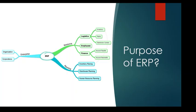SAP is an ERP system. ERP stands for Enterprise Resource Planning. 'Enterprise' represents organizations, corporations, and companies. In any company or organization, they have logistics — including plants, inventory, and distribution centers — as well as employees and finance with various financial functions. All of those are enterprise resources.